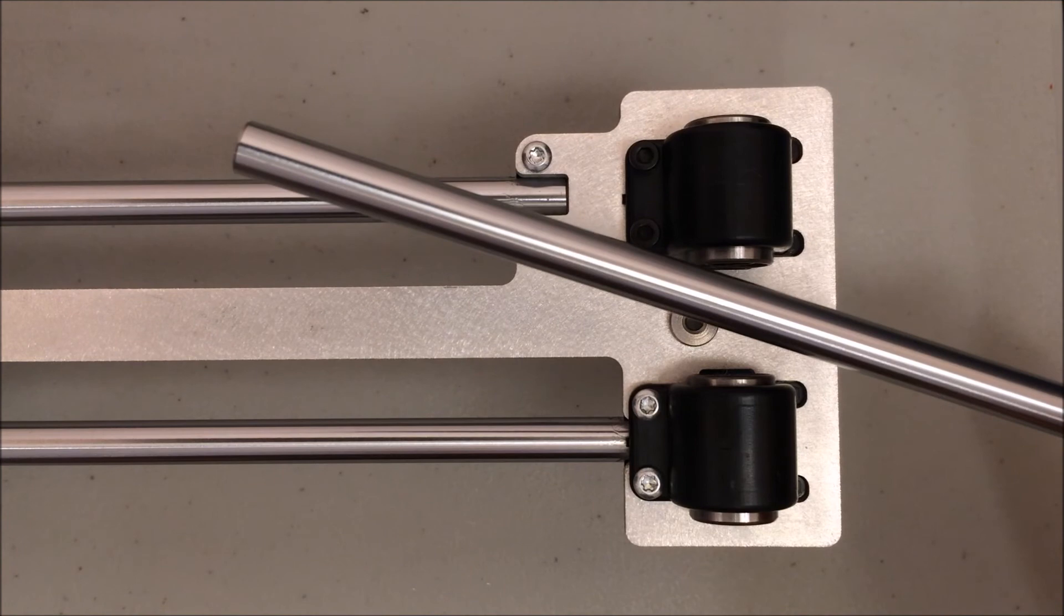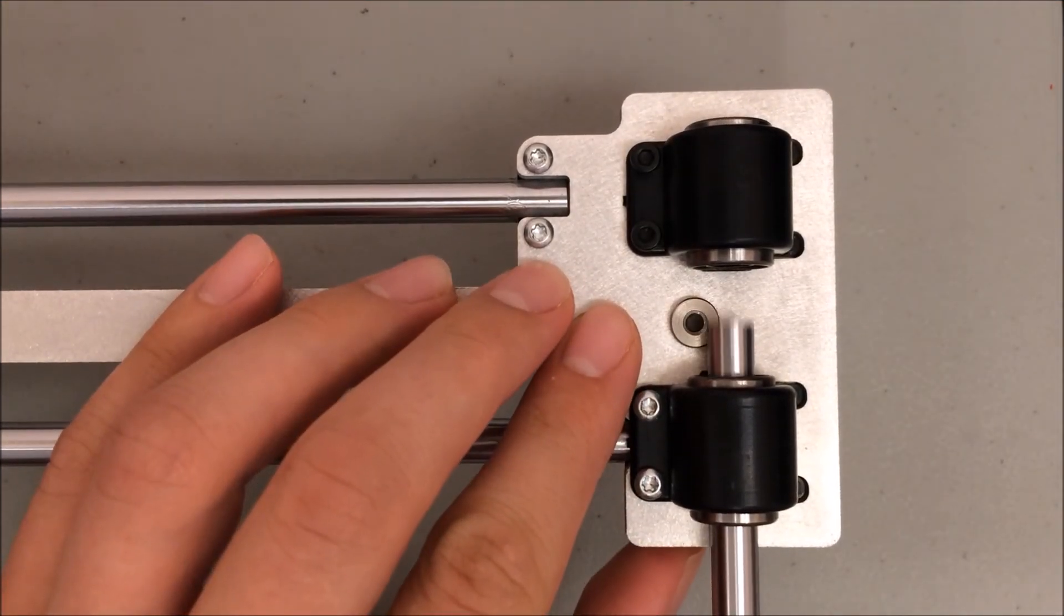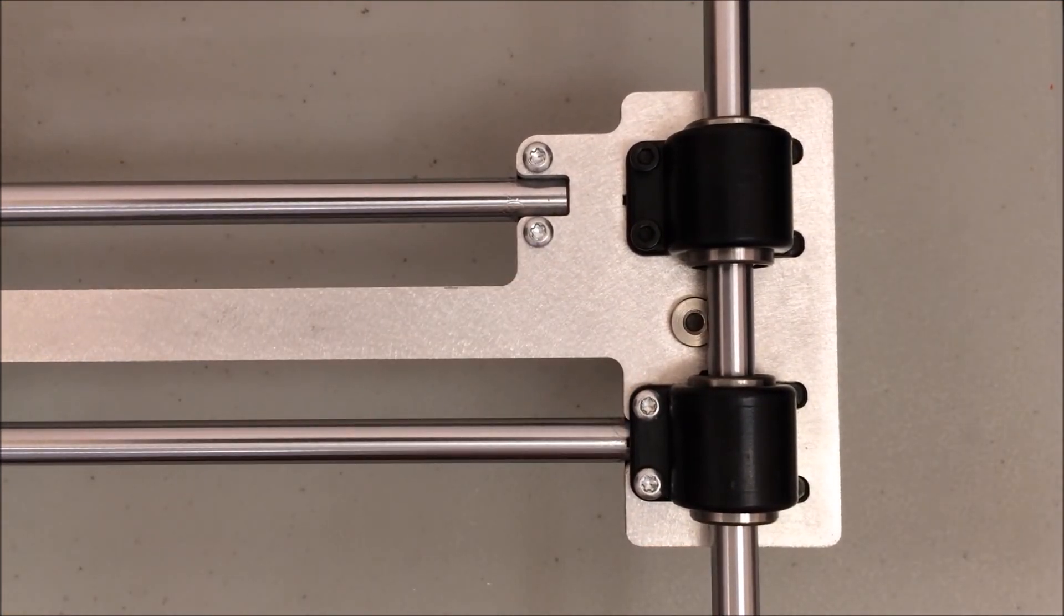So take one of the smooth rods that hasn't been attached yet and just slide it through the two bearings to make sure that it's aligned. I've yet to hit any resistance when I've checked any of the bearings and you most likely won't hit any resistance either.